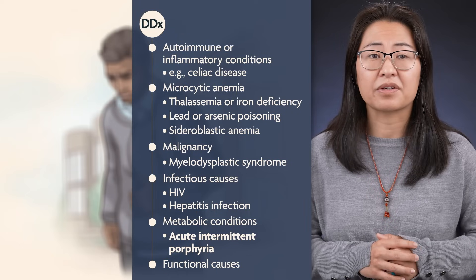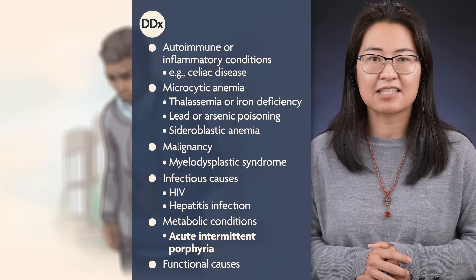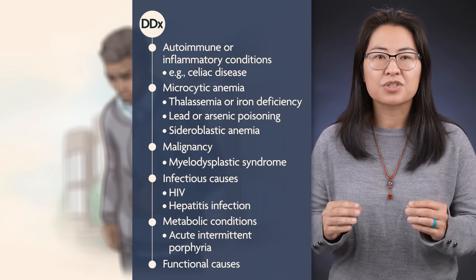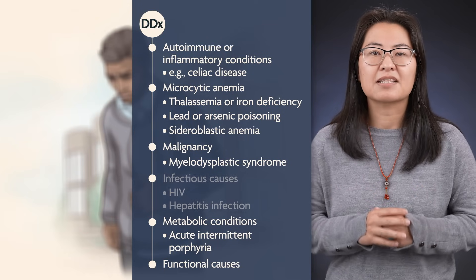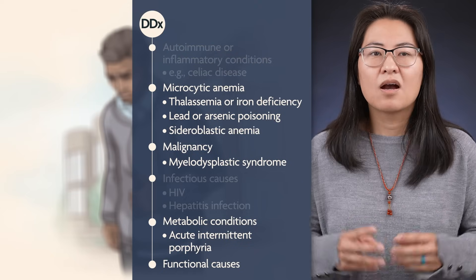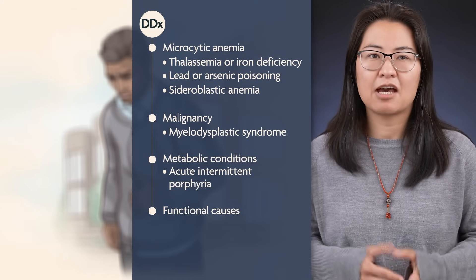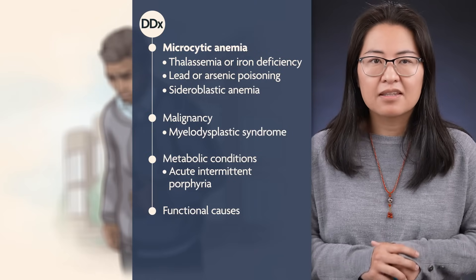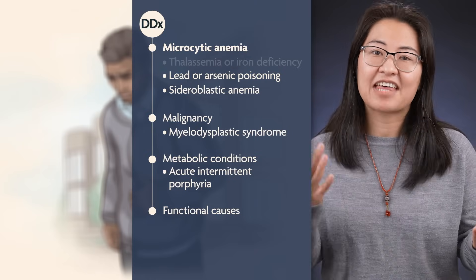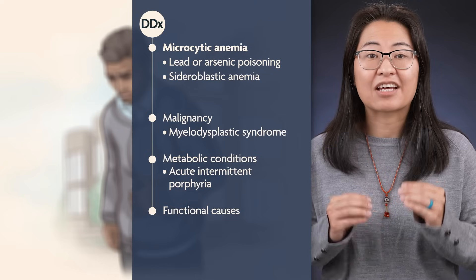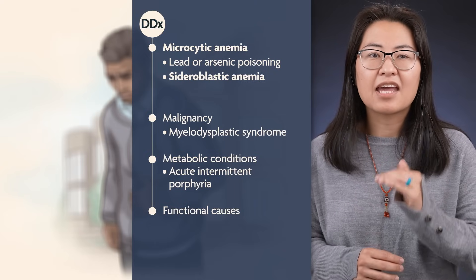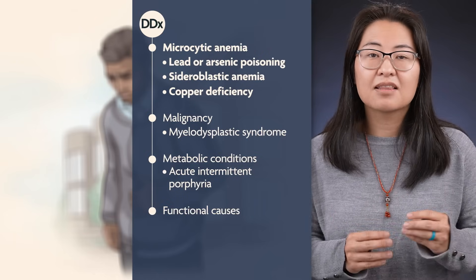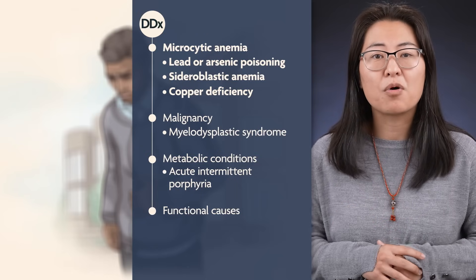However, acute intermittent porphyria is not generally associated with anemia and typically consists of episodic abdominal pain. H. pylori infection does not explain this patient's anemia. The negative cultures and normal CSF findings further argue against infectious or inflammatory causes. When faced with a constellation of unexplained symptoms, it can be helpful to focus on an objective finding with a limited differential diagnosis. Microcytic anemia is one such finding. The evaluation has ruled out iron deficiency and thalassemia. Remaining conditions include sideroblastic anemia, lead poisoning, and copper deficiency. Lead and copper levels should be assessed; if normal, a bone marrow biopsy is warranted.